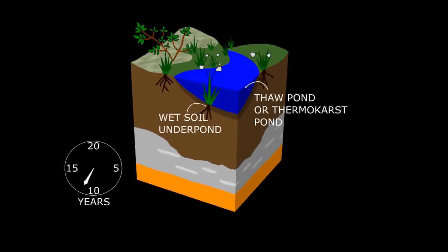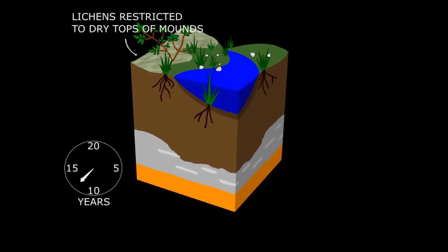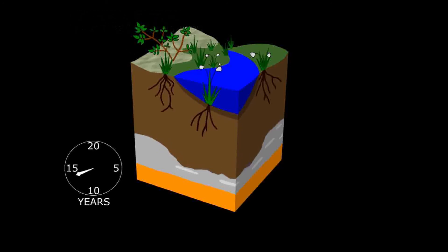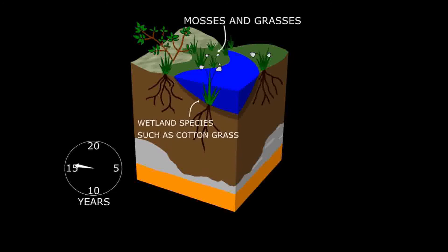These ponds are called thermokarst ponds. In some instances, permafrost thaw and pond formation are very rapid following a collapse of the ground surface. New plants grow such as cotton grass at the edges of the ponds.